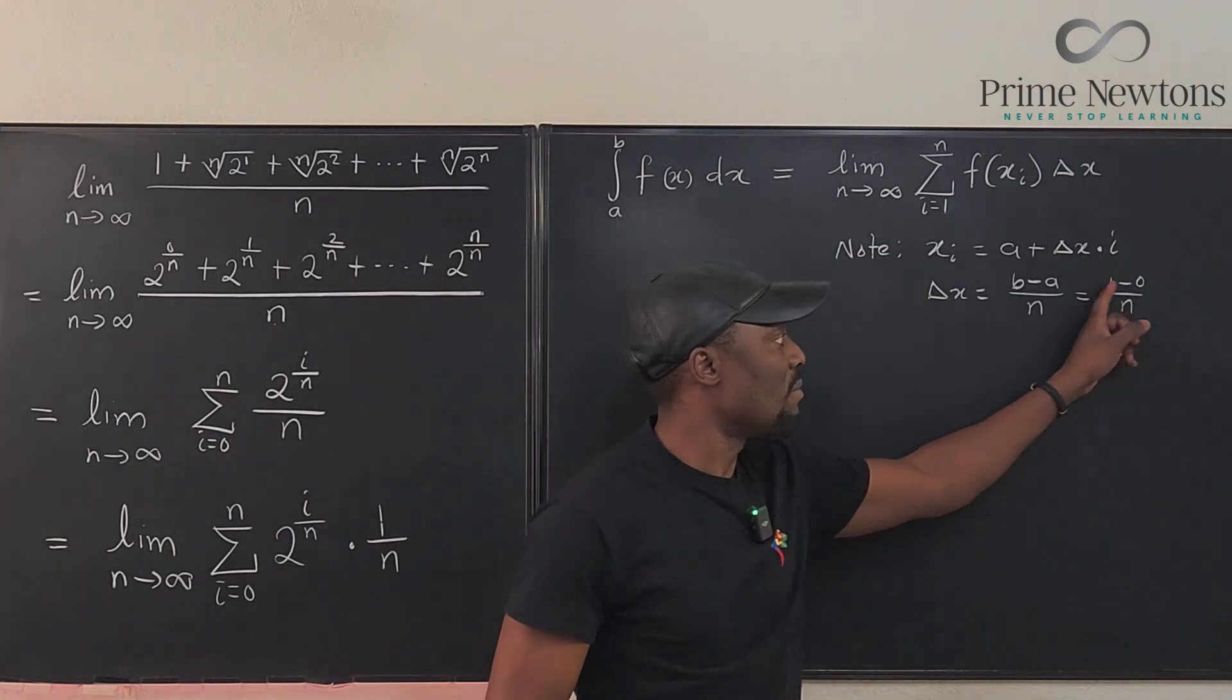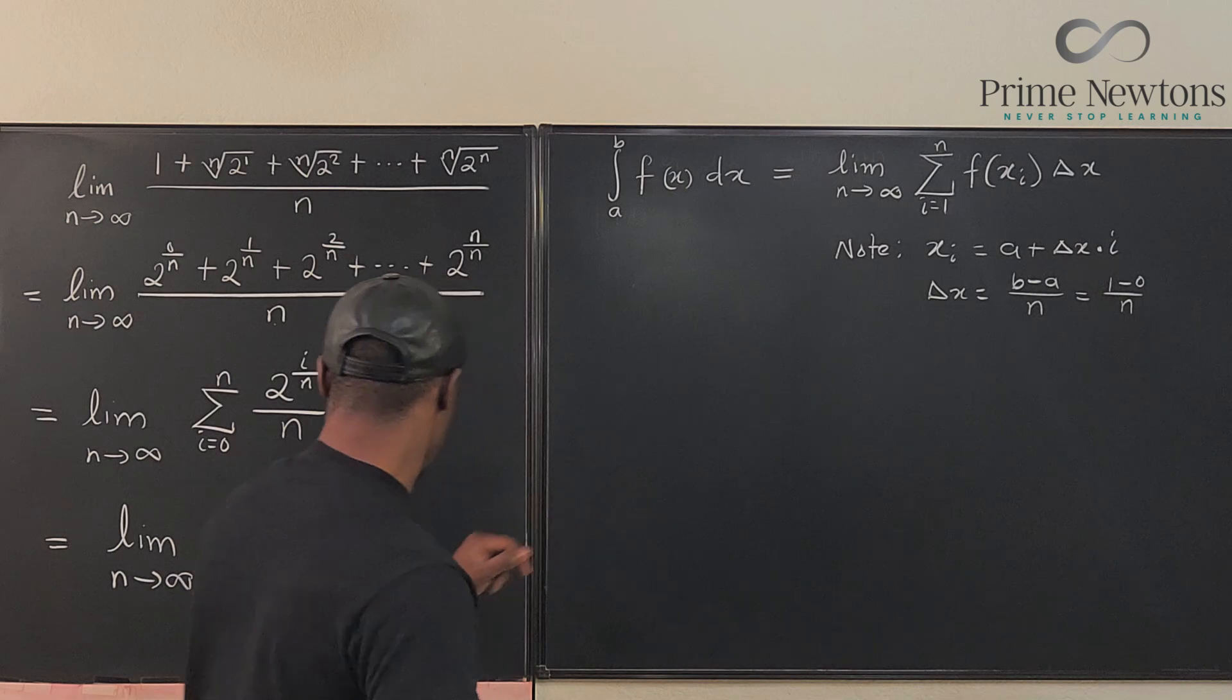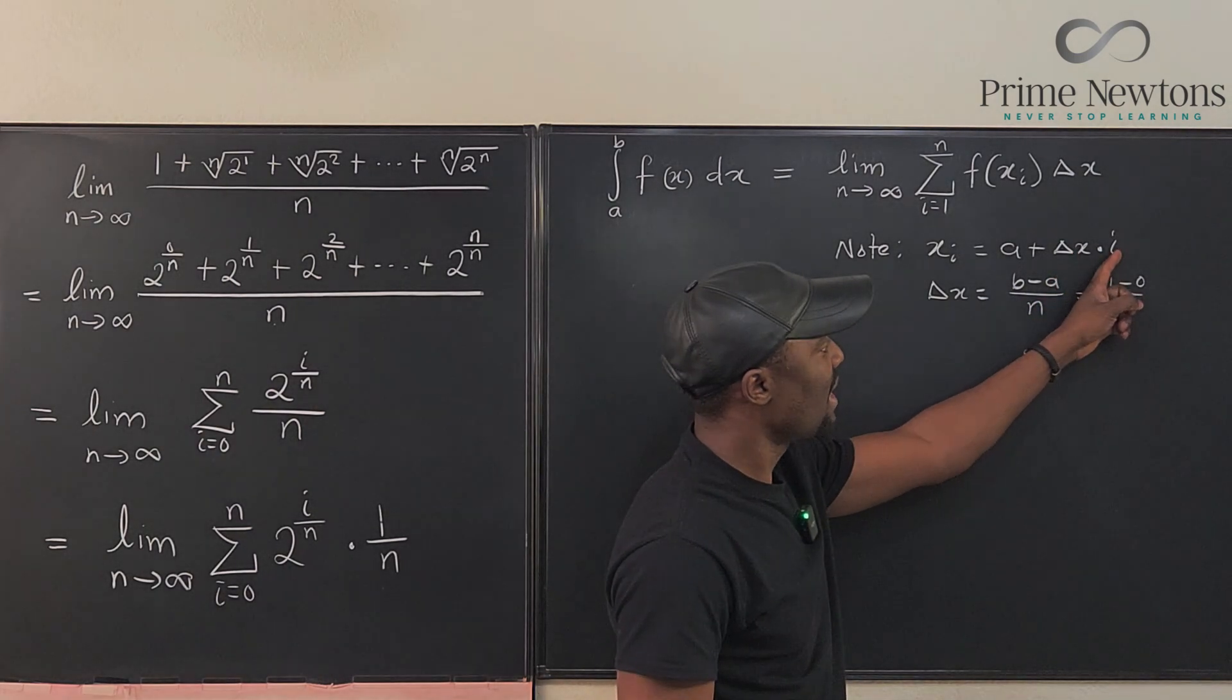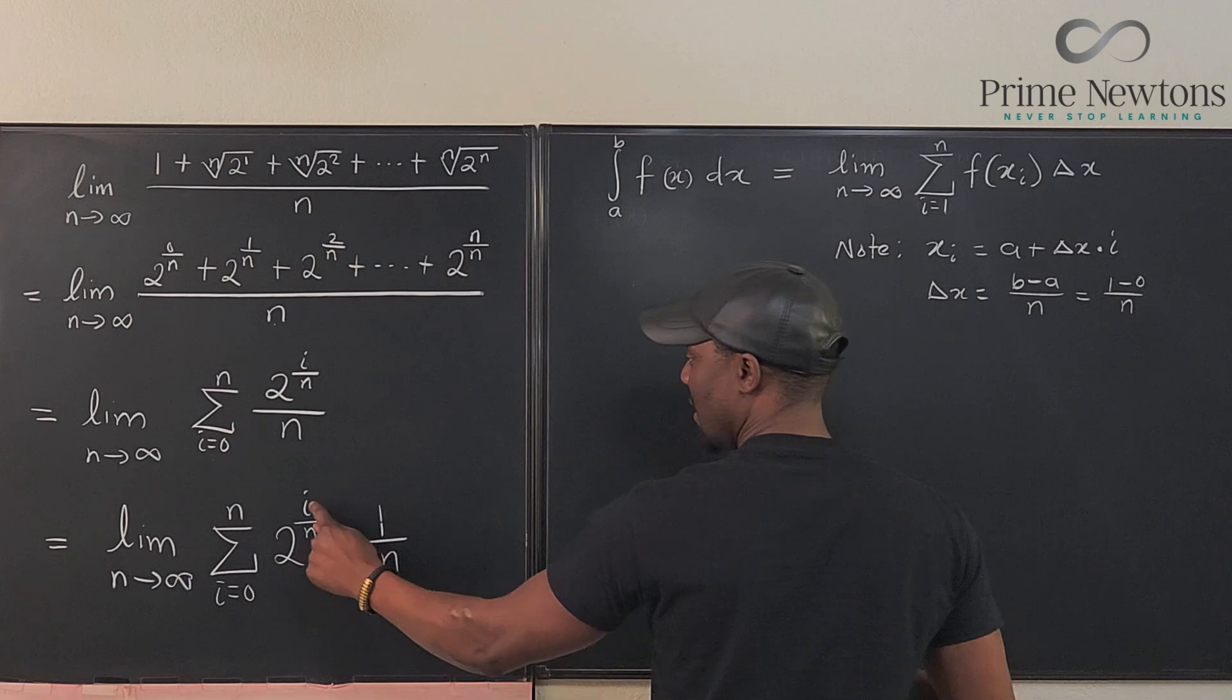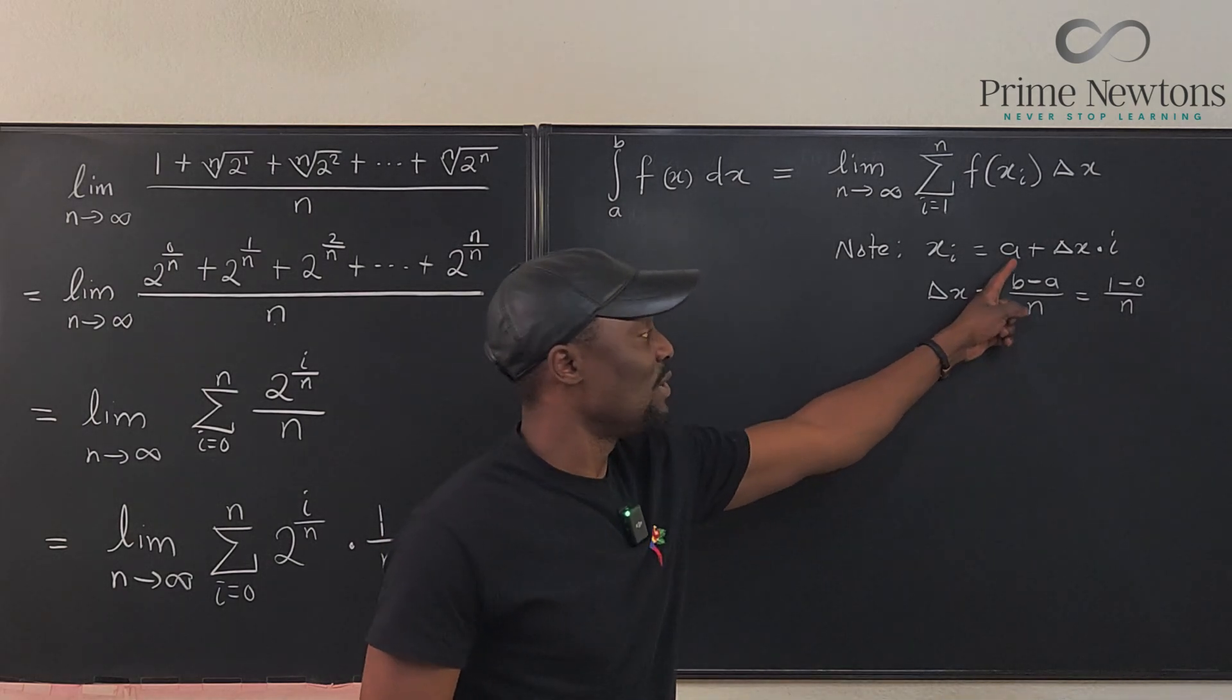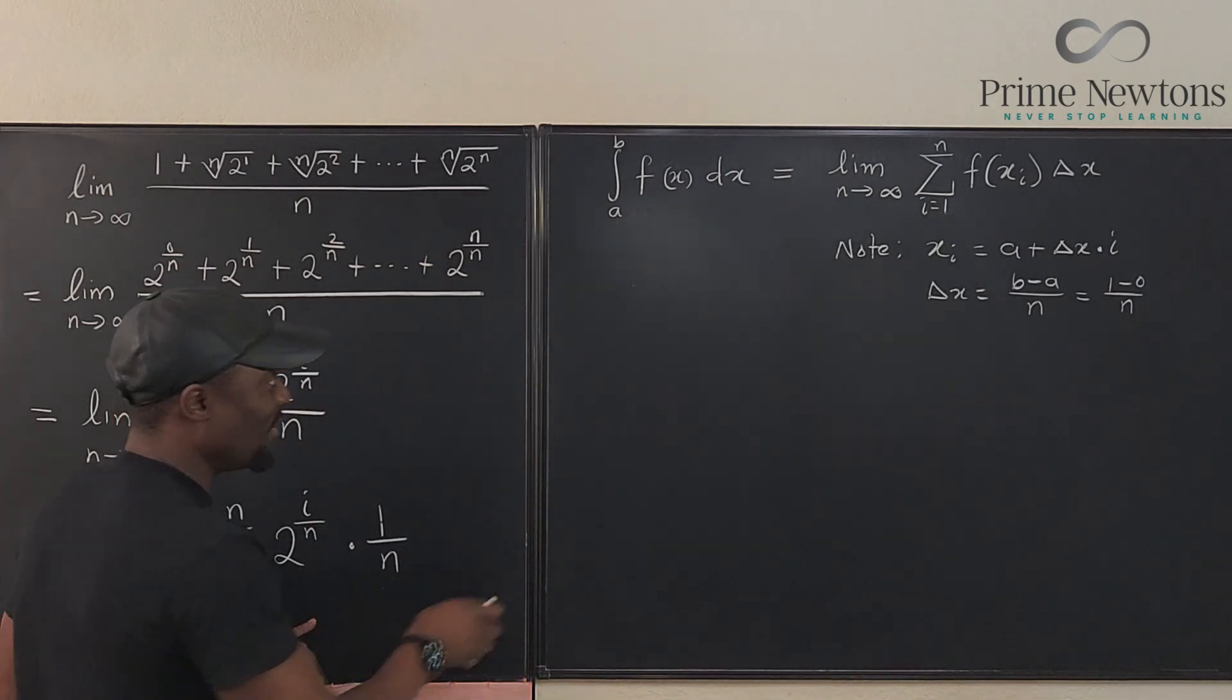Now, how do I know it's 1 minus 0 and not 2 minus 1? It's because if we're using the right endpoint, look here, 2 raised to power i over n is basically, look, delta x times i is 1 over n times i. Here, you see, that is your xi. The variable that's changing is just 1 over n times i. So it means that there is no a, the a is 0, which means that this has to be 0. So what we're saying that this integral here...